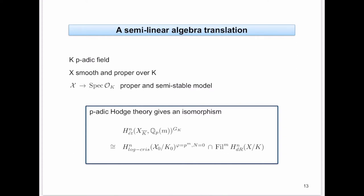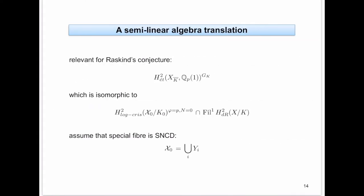The left side of the intersection depends on the special fiber only — as in the L different from p situation — and it is intersected by the Hodge filtration, which carries information from the big X. The question is: can we unwind this? For Raskind's conjecture, n=2 and m=1.